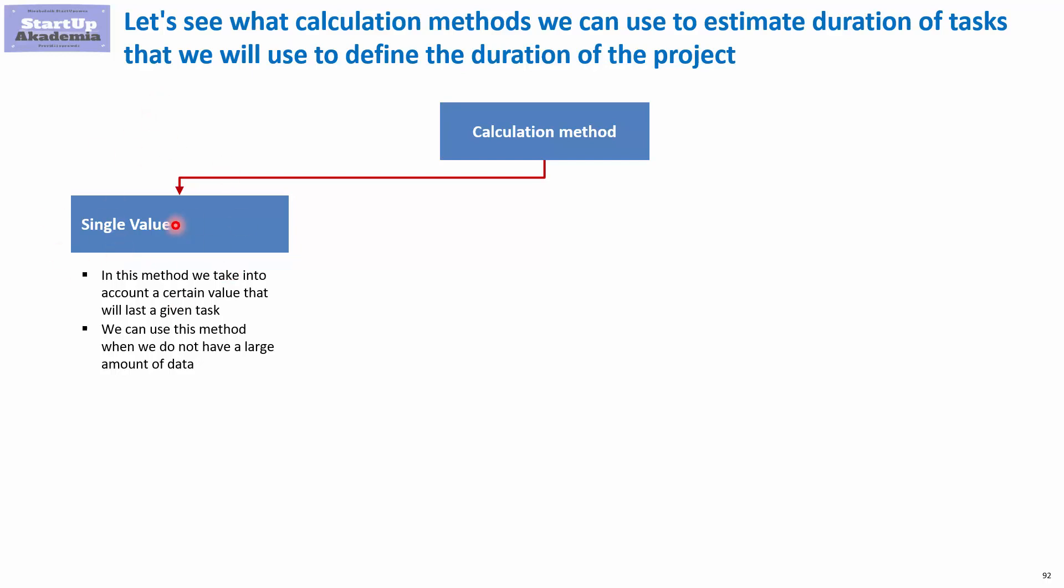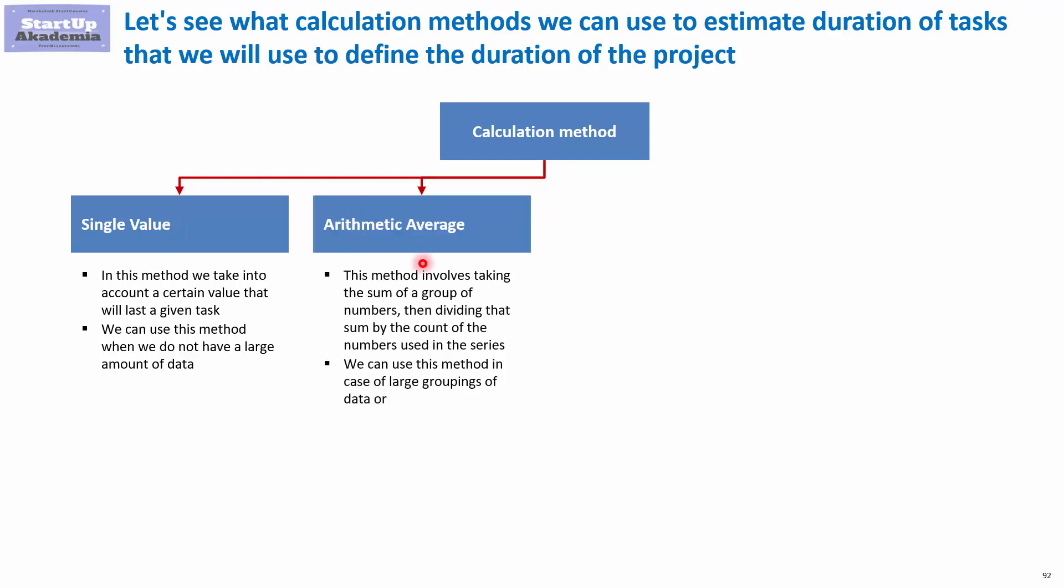A better approach is to have more than one value, more than one estimation. For example, ten different experts give you different estimations and you simply calculate the arithmetic average.